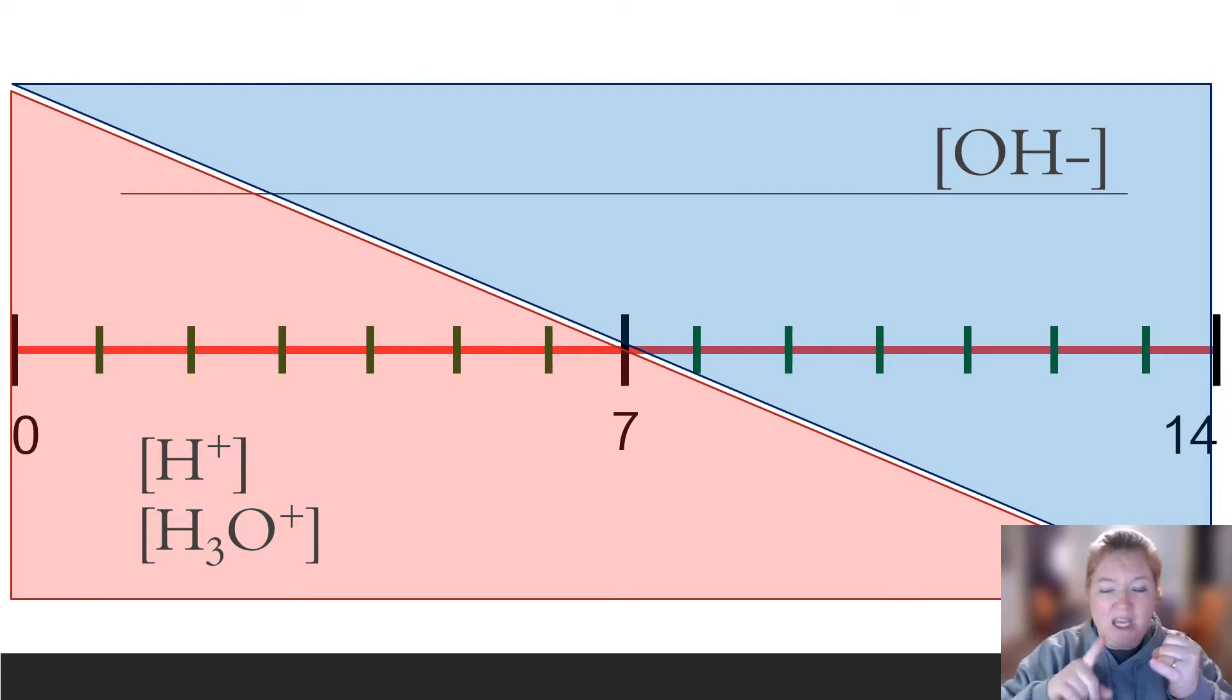So if the pH is 1, the pOH is 13. If the pH is 7, the pOH is also 7. That's equal 14.